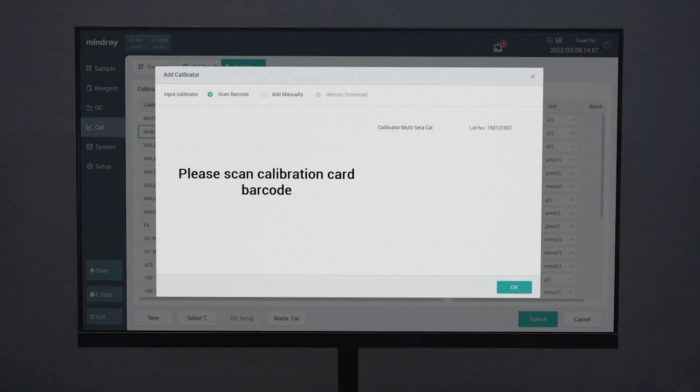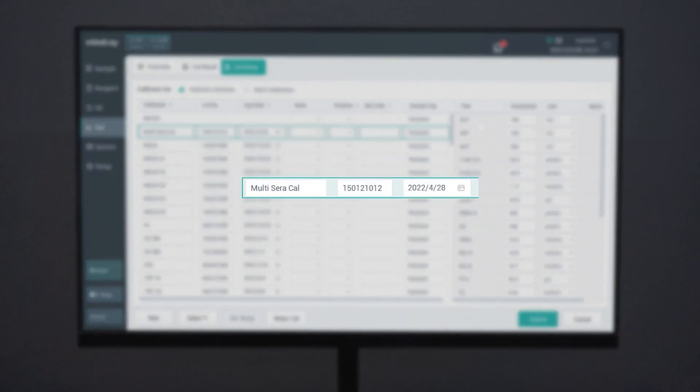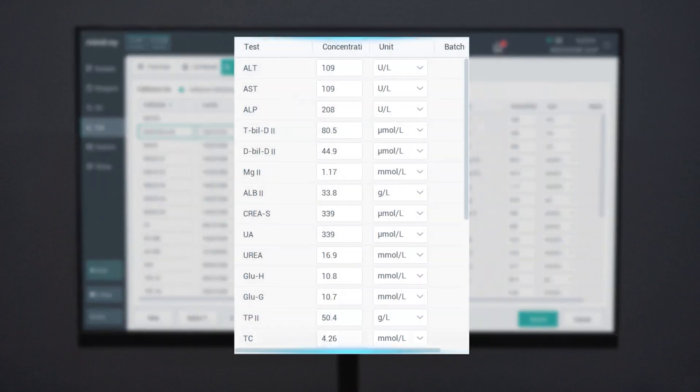Caliber and control values are input by QR code scanning intelligently, which helps to improve work efficiency and eliminate human mistakes.